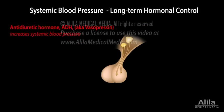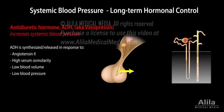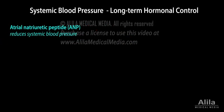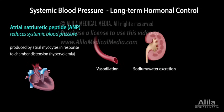Antidiuretic hormone, ADH, is a neurohormone produced in the hypothalamus and released from the posterior pituitary in response to angiotensin-2 and a number of other signals. Its major function is to retain water in the collecting ducts of the kidneys. At high concentrations, ADH also acts as a vasoconstrictor. Atrial natriuretic peptide, ANP, is produced by atrial myocytes in response to chamber distension, or hypervolemia. ANP promotes vasodilation, sodium and water excretion, and antagonizes RAS, thus reducing blood volume and pressure.